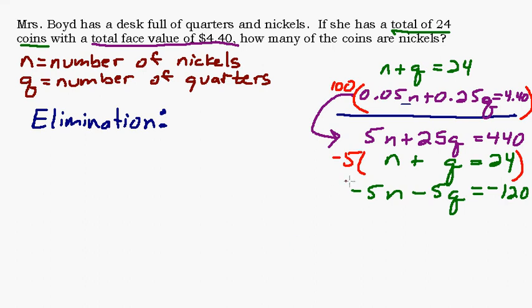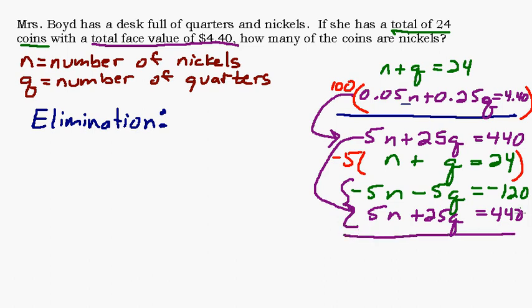So now I'm going to take this purple equation, and I'll write it down here again, and I'm going to add it together. I'm going to add these two together, which makes the n's drop out. And I have 20q equals 320. Divide both sides by 20, and yay, q equals 16, which is what we got last time. So we know we're right.